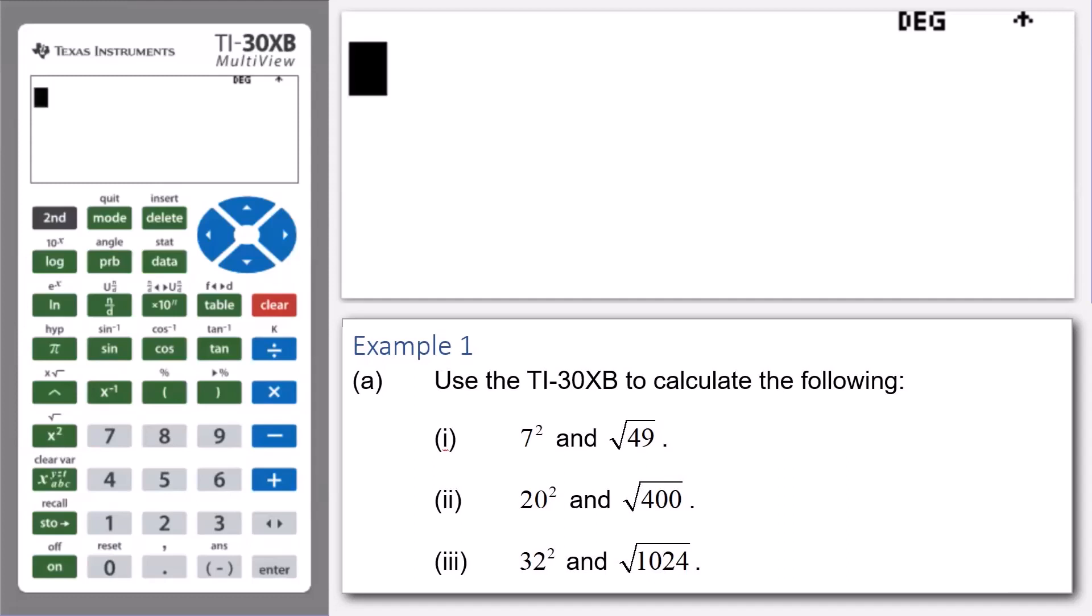7 squared and the square root of 49, 20 squared and the square root of 400, and 32 squared and the square root of 1024. After we perform those calculations, we'll then look at part B and what that is asking us.